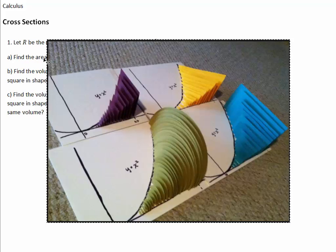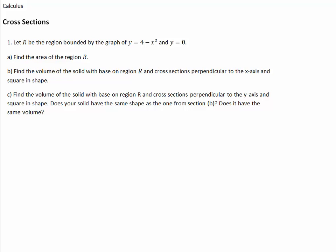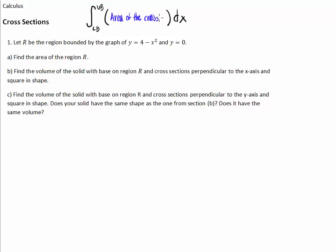The general equation we're going to use is the integral from our lower bound to our upper bound dx, where the integrand is the area of the cross-section. As with that picture, the radiuses are going to change. The formula for the area will have a variable in it because the areas are changing. Since our areas are changing for our shapes, there's going to be a variable in there — and that's just fine.